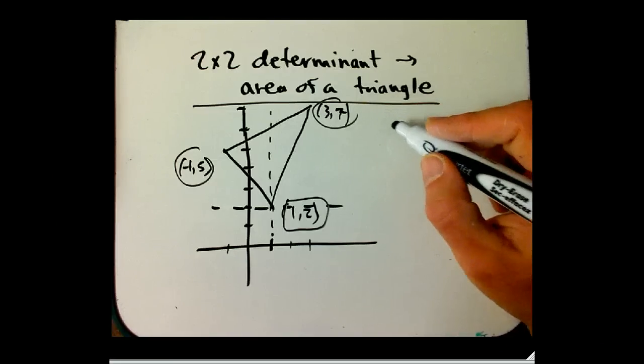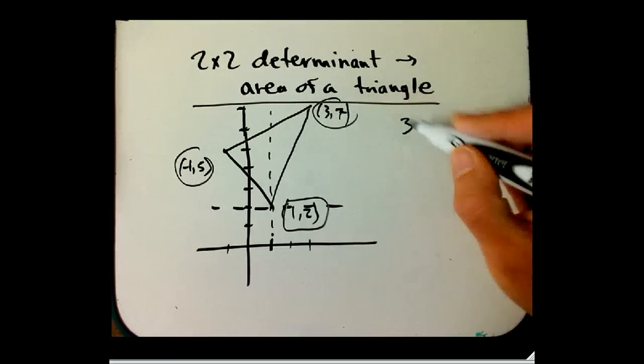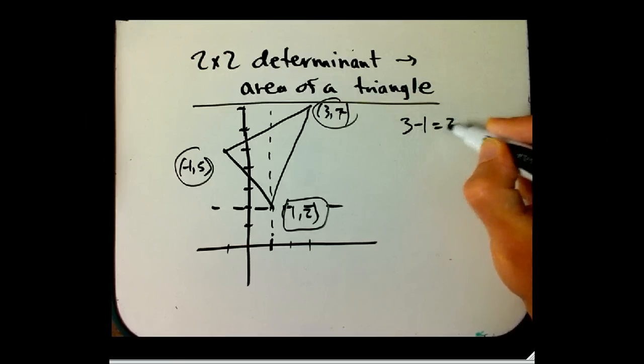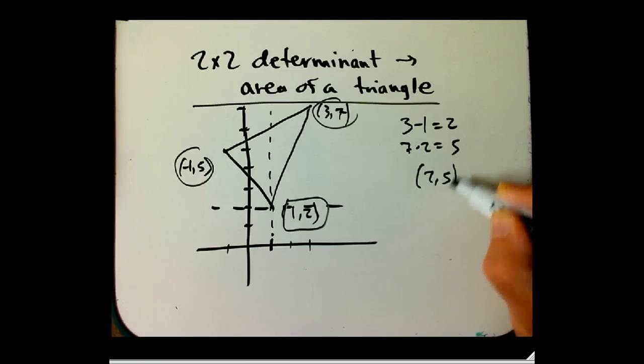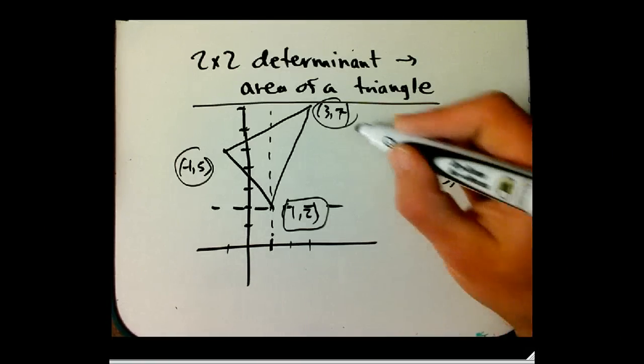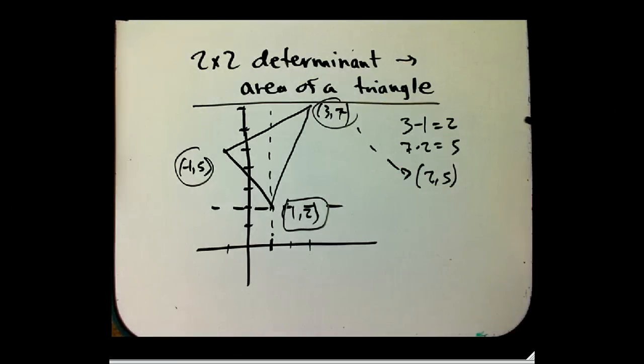So, we're going to take like this vertex, for example, 3 minus 1 is 2, and 7 minus 2 is 5. So that's going to become 2 comma 5, and that's the new version of this guy. It's 2 units over and 5 units up from that guy.